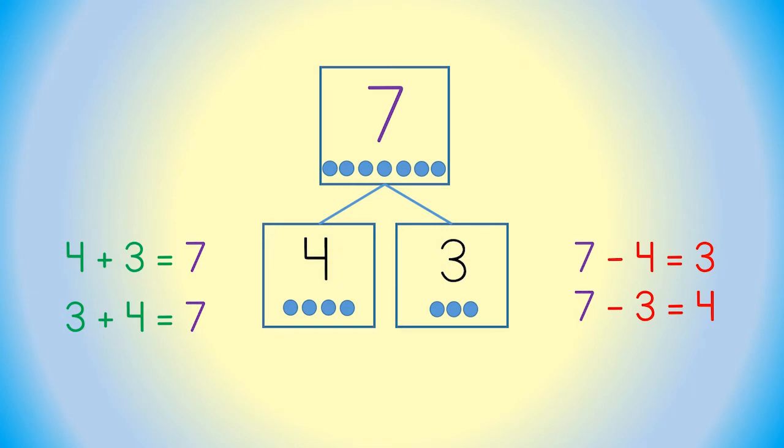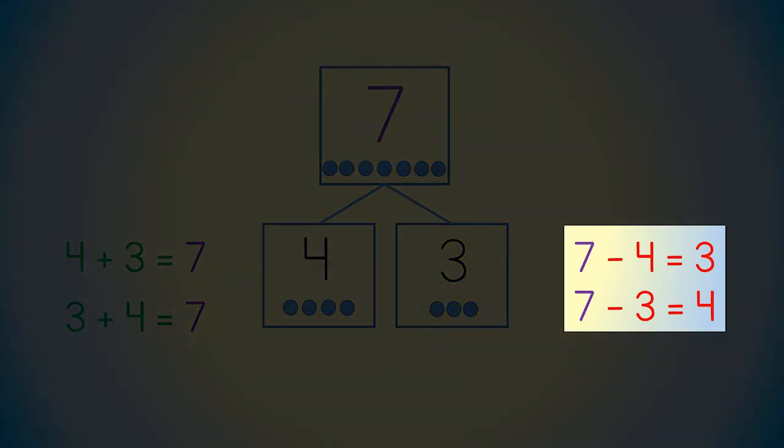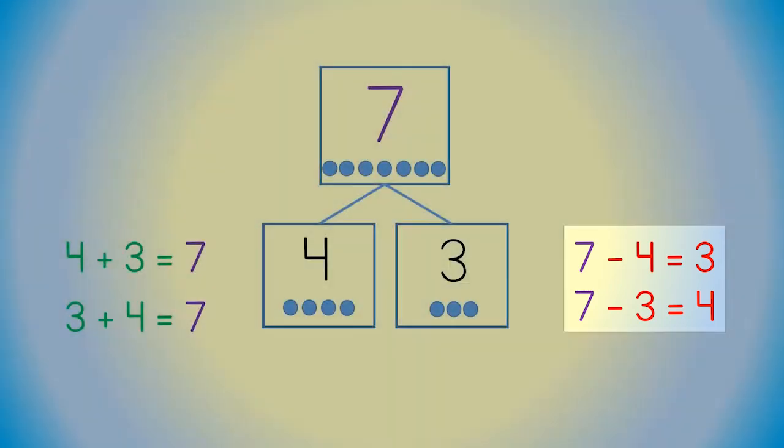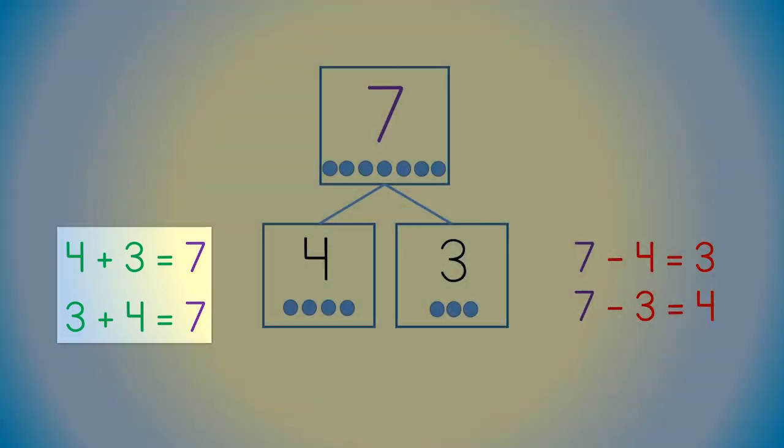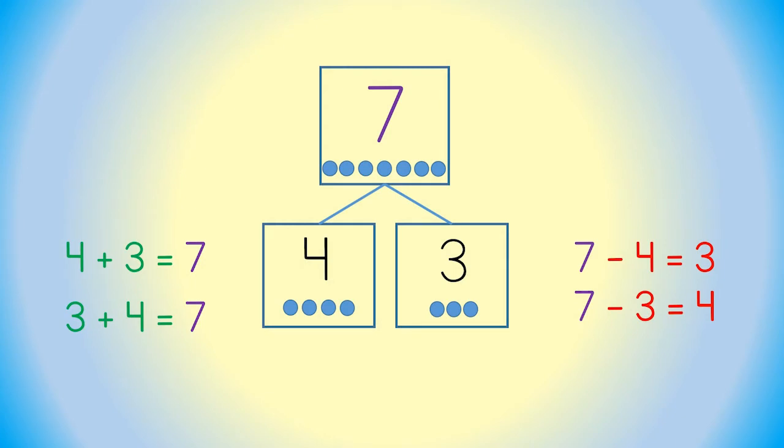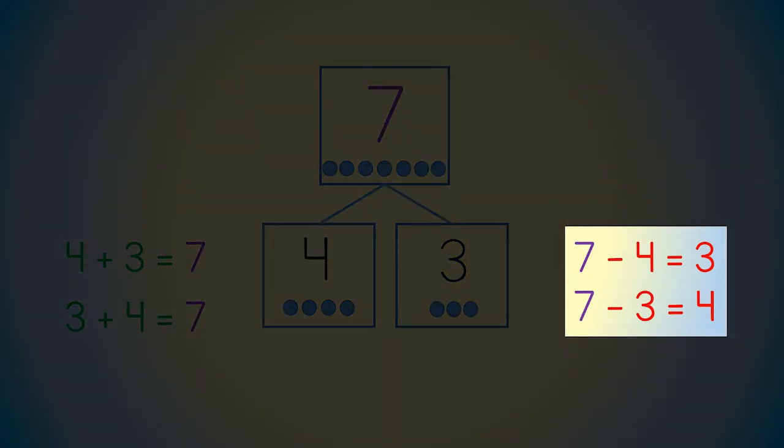Can the same be said about the subtraction sentences? Here, you see 7 minus 4. Is that the same as 7 minus 3? No. In the two addition facts, the numbers on each side of the equal sign are the same, 4 and 3. But this is not true with subtraction. 7 and 4 and 7 and 3.